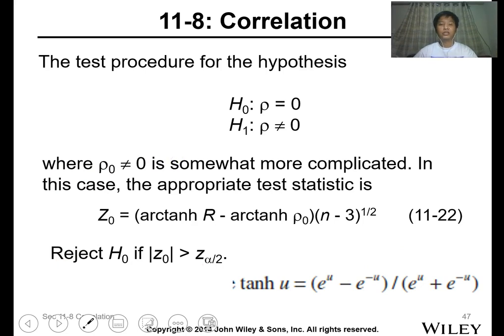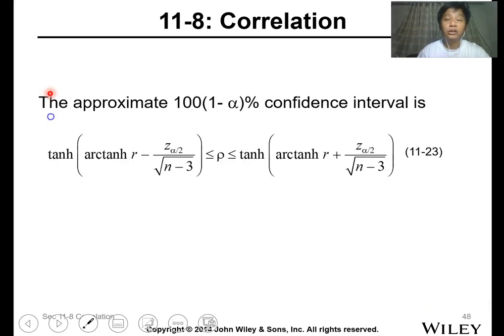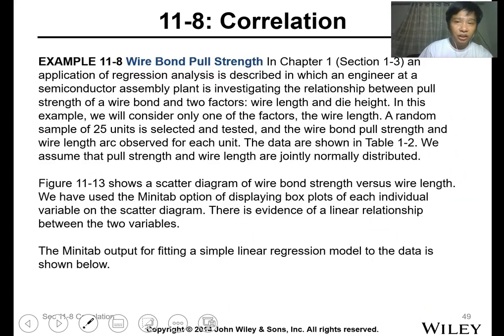So the test procedure for the hypothesis is this one. You can use this formula also, the arctanh r minus arctanh rho times square root of n minus 3. So you can use this to calculate.